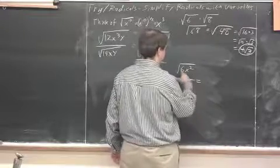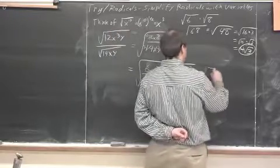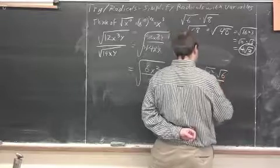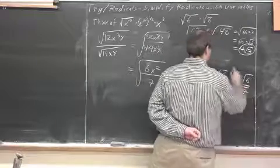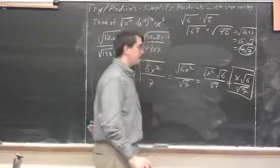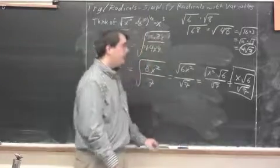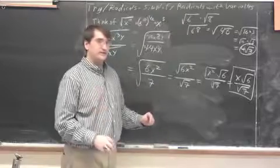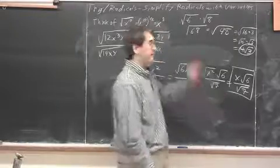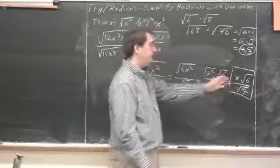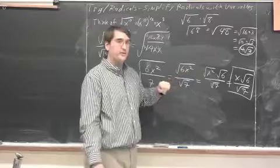Since we can't reduce further, we separate: radical 6x squared over radical 7. The x squared comes out, giving x times the square root of 6 over the square root of 7. So the final answer is x radical 6 over radical 7. However, that's not technically the final answer — we need to do something called rationalizing, since we don't want a square root left in the denominator. Check the next video for an explanation of how that works.